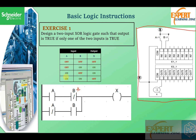For the second branch, A is off so A will allow it, and B is on so B will also allow it. This branch becomes true and the output is on.